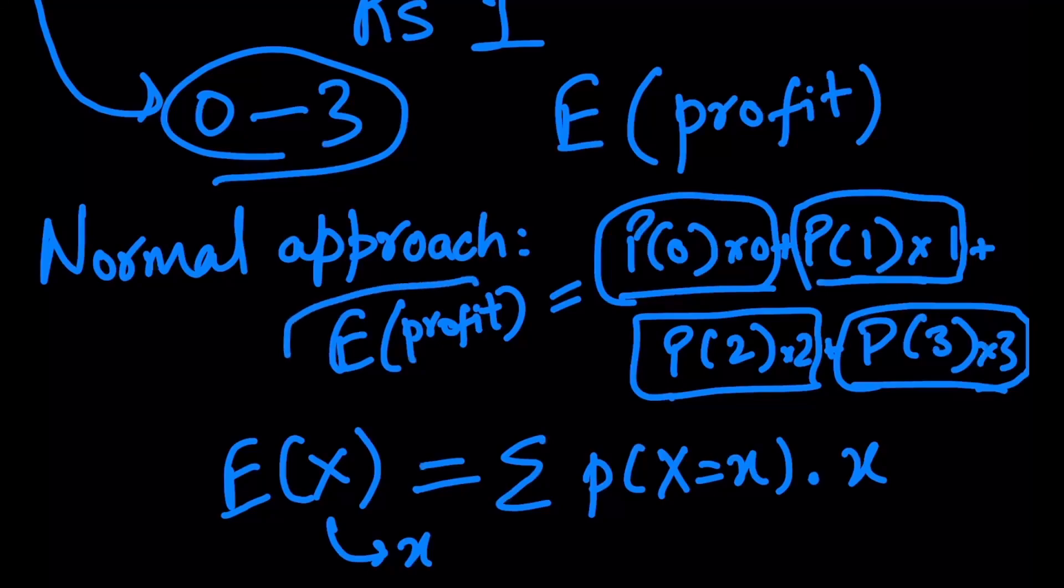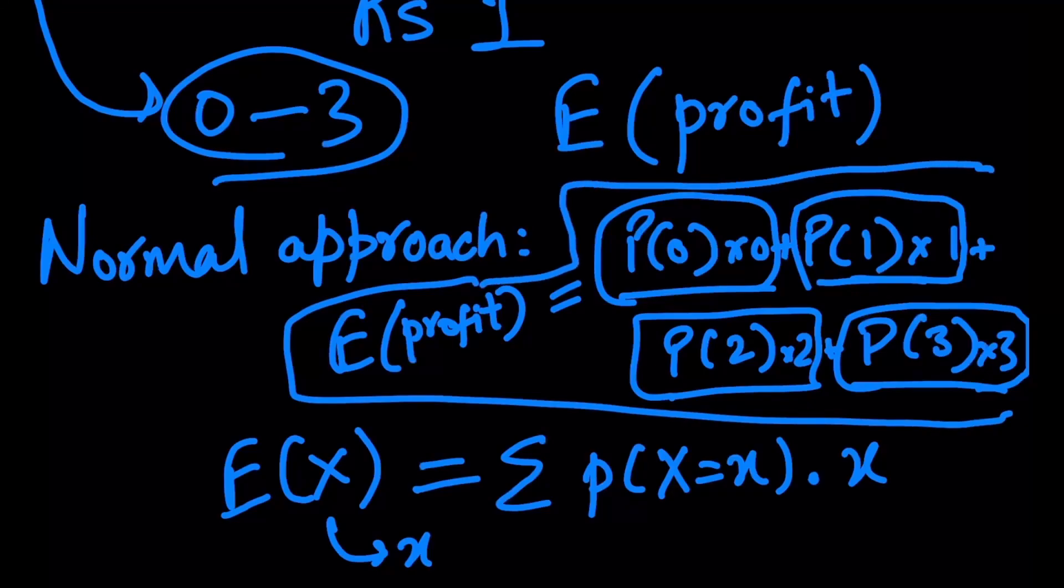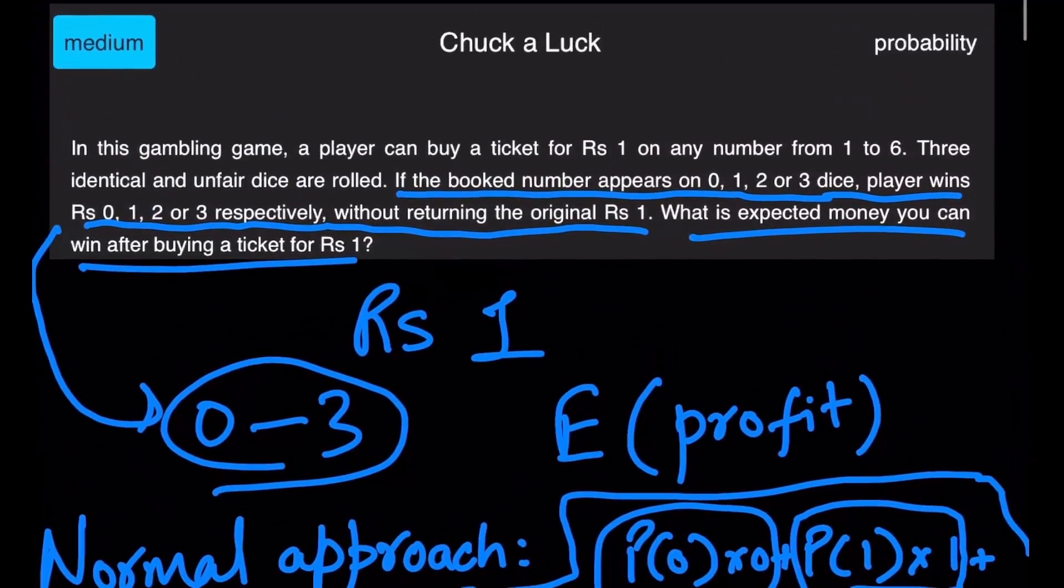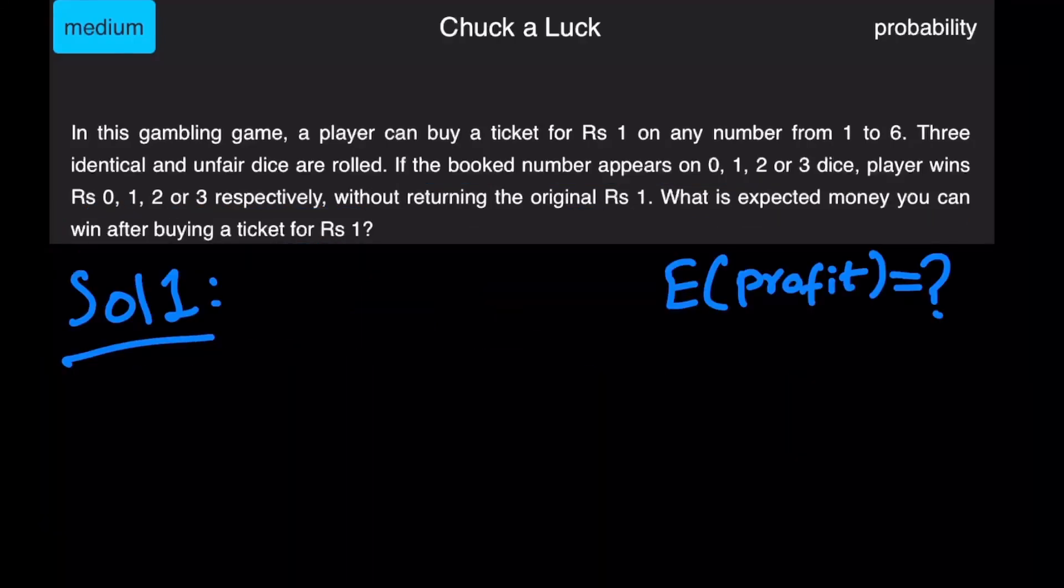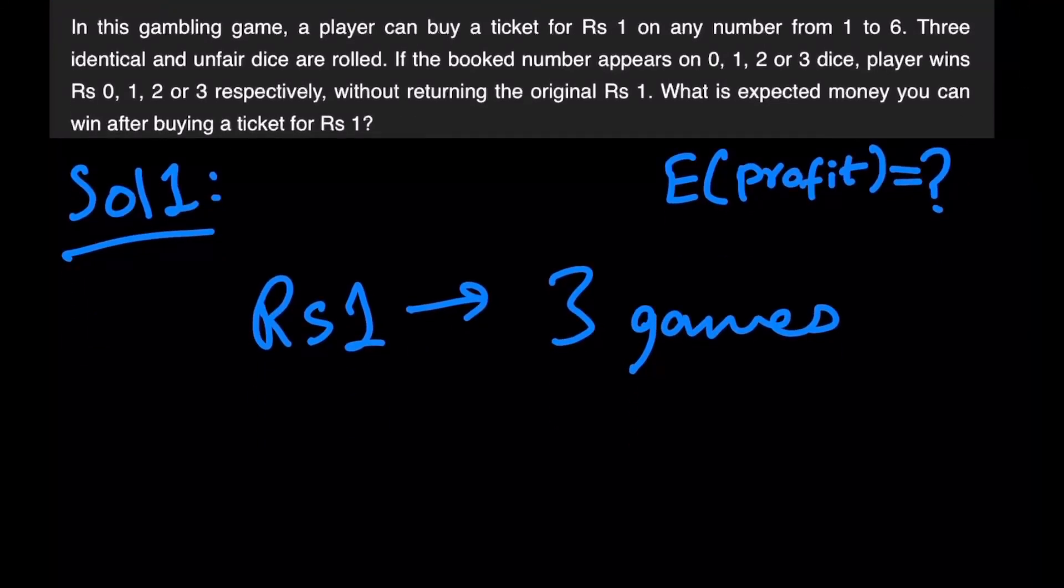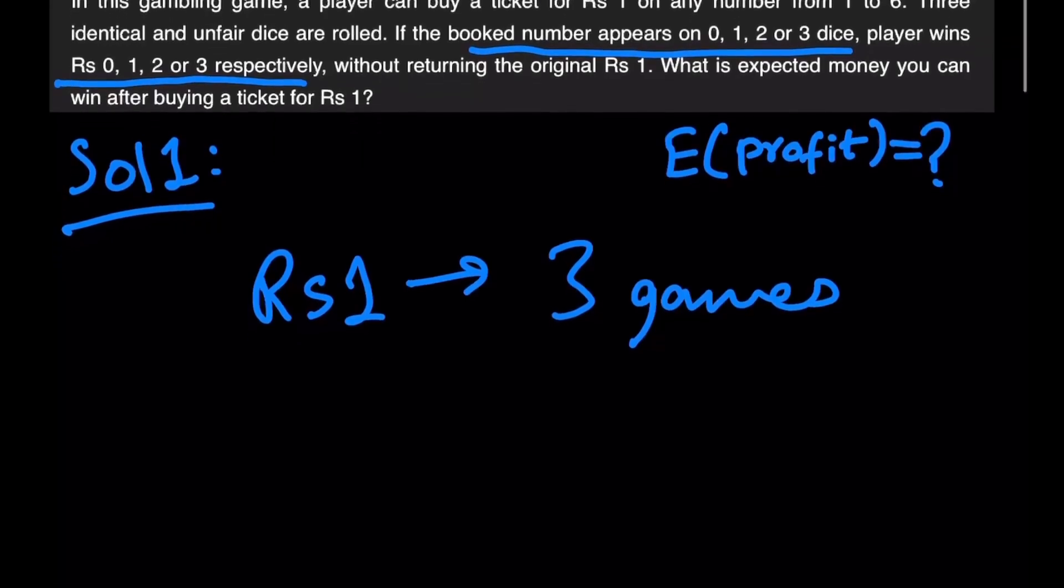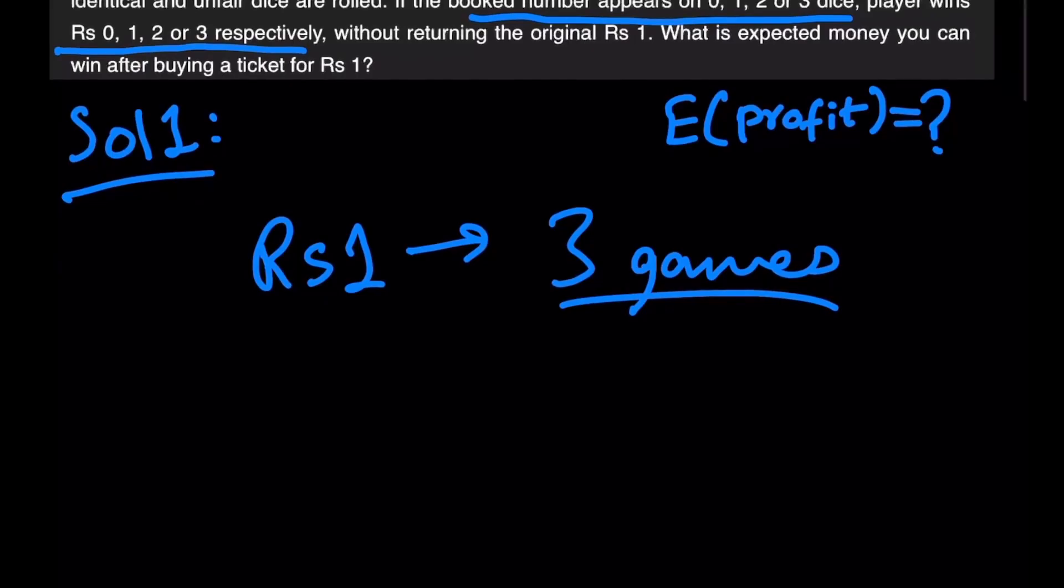Right, now this approach is good, but there's better approaches that we can use if we try to think about the problem smartly and simplify the problem using some tricks. So I'm going to go over two such approaches in this video. To understand this approach, you have to read the problem really carefully. What is given to us is that we are spending one rupee to play three games and all of those three games are identical. What's happening in this scenario is that according to the number of times our booked number appears on the dice, we are getting the exact same amount of money, right?